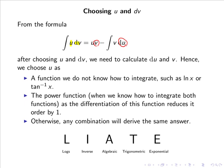We choose u as a function we don't know how to integrate, such as ln(x) or tan⁻¹(x). Or if we know how to integrate both functions, we choose the power function, as differentiation reduces its order by 1. Otherwise, any combination will derive the same answer.